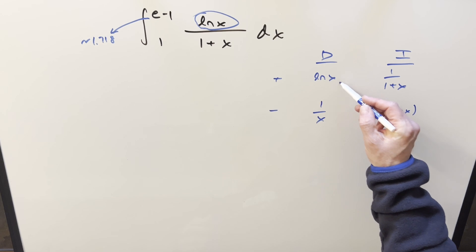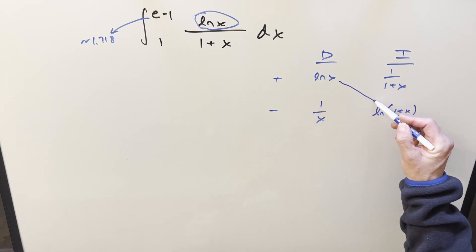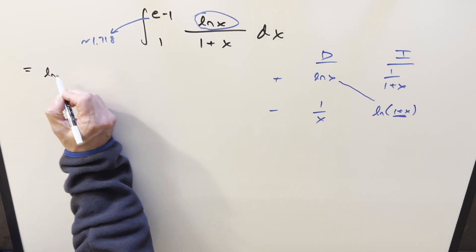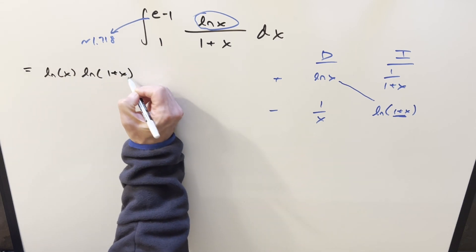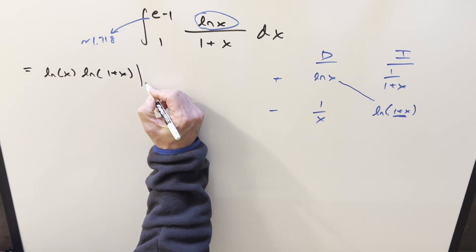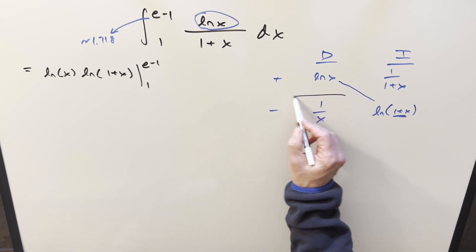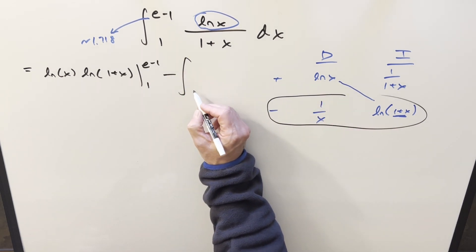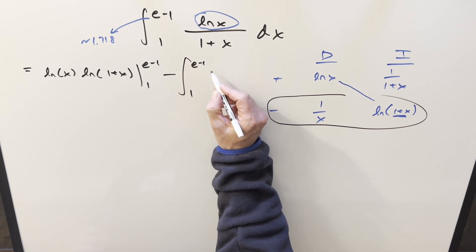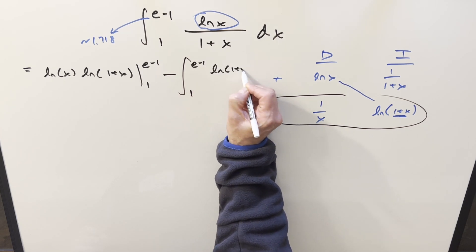So then next, we're going to have part of the solution here on the diagonals. So capturing that part, it's going to be ln x times ln 1 plus x, and we're evaluating from 1 to e minus 1. And then this stuff here is an integral, so this is going to be the integral from 1 to e minus 1 of ln 1 plus x over x.